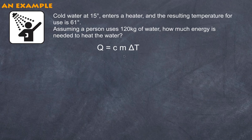Q, of course, is what we're after, so we'll write this down as unknown. Our specific heat capacity is 4182 joules per kilogram per degree Celsius. Our mass in this case is equal to 120 kilograms.